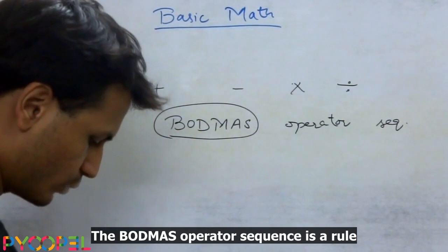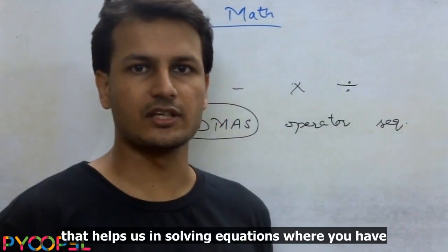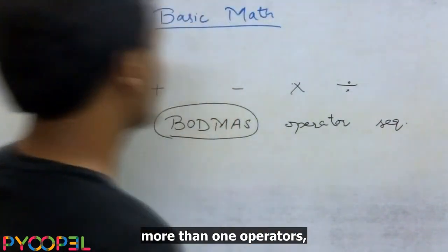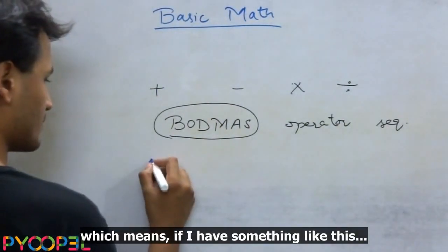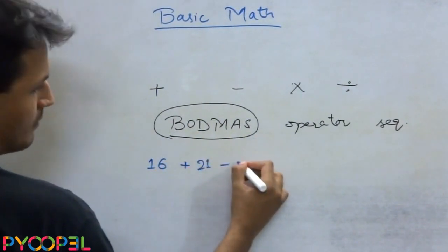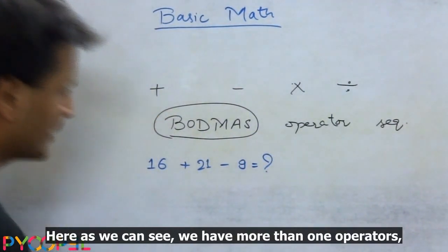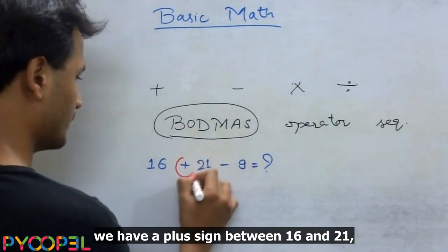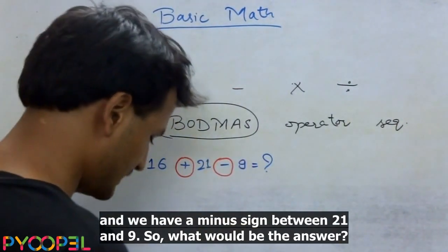The BODMAS operator sequence is a rule that helps us in solving equations where you have more than one operator, which means if I have something like this, how do we solve this? Here as we can see we have more than one operator: we have a plus sign between 16 and 21 and we have a minus sign between 21 and 9. So what would be the answer?